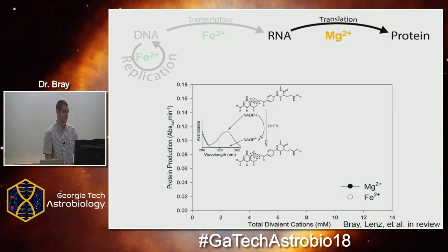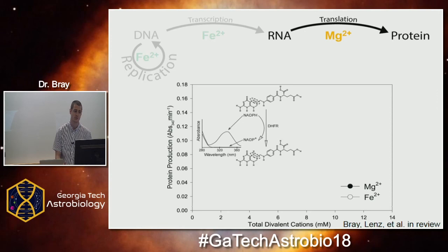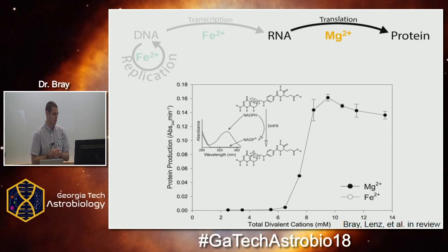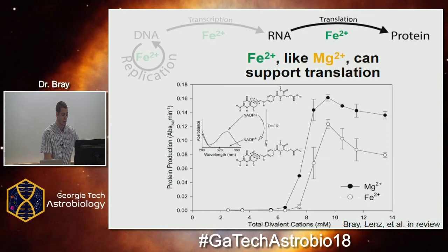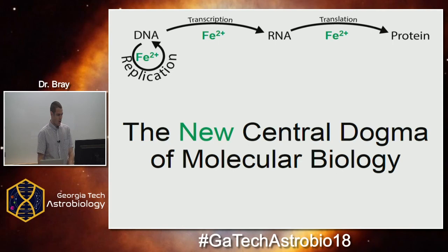The first two steps look good — we can substitute magnesium for iron. Then we went to translation, arguably the most intricate step with respect to what the cations are doing. We measured protein production activity over a range of concentrations. With magnesium, there's a maximum around 9 to 10 millimolar — consistent with what others have found. When we swapped in iron, it's definitely supporting translation, albeit at slightly lower rates, with the same concentration dependence and maximum around 9 to 10 millimolar.